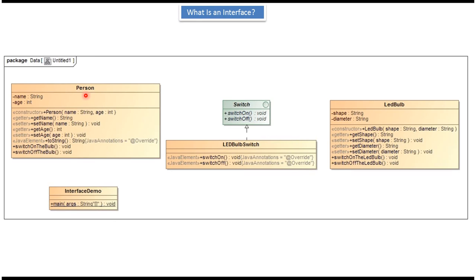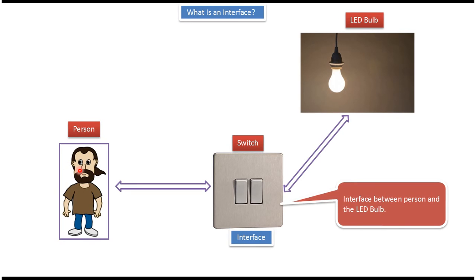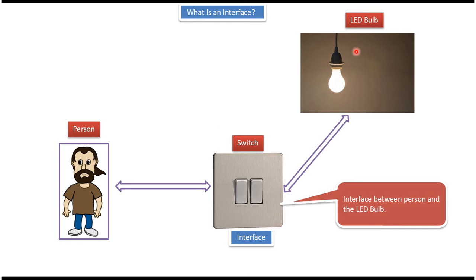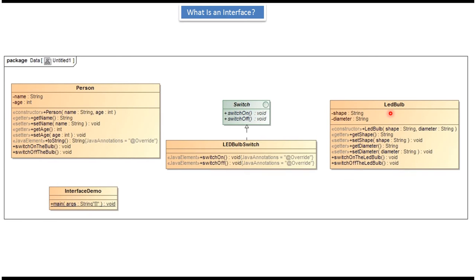Here I have defined a Person class to represent a person. It has two attributes, name and age, and getter and setter methods for these two properties. It has a switch-on-the-bulb method and a switch-off-the-bulb method, and a person constructor to create the person object. The LED bulb class represents an LED bulb. It has two properties, shape and diameter, getter and setter methods for those properties, an LED bulb constructor, and switch-on and switch-off methods.